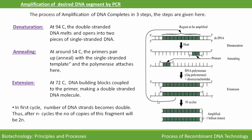After the first cycle of PCR, the number of DNA molecules becomes double. Thus, after n cycles, the number of copies will be 2^n. You can do PCR for up to 30 cycles.